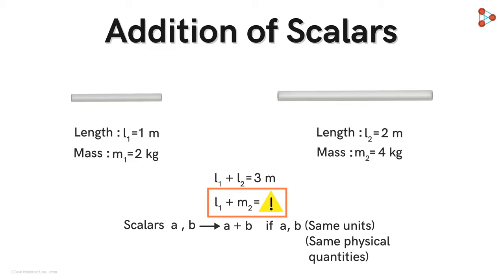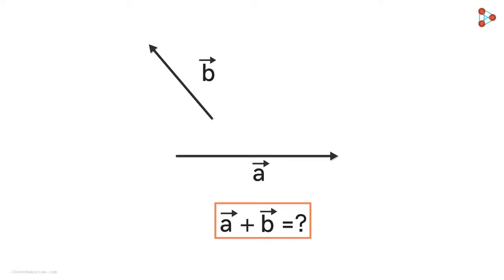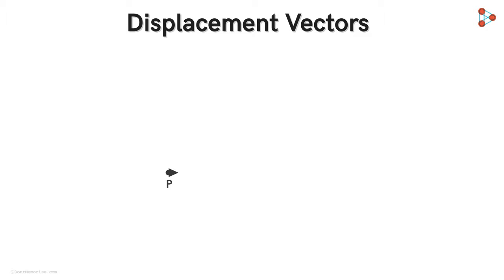Similarly, to understand what the addition of two vectors means, we will have to look at the vector quantity they represent. Let's consider displacement vectors. Suppose we are at point P and we move to point Q. We know that this displacement will be given by the vector PQ. Now suppose from point Q, we move to the point R — then this displacement will be given by the vector QR.